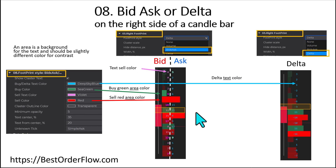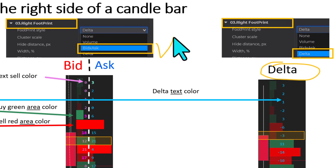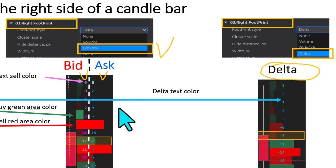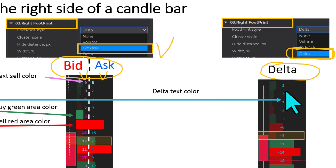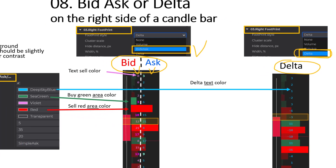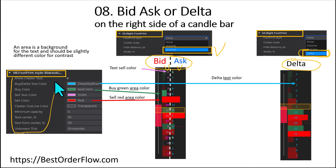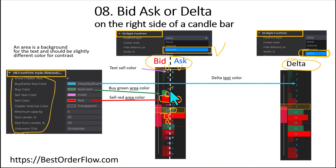We can fine-tune the right side of the candle bar. If we select bid and ask, we see two columns — left for the bid and right for the ask. Or we can choose to show only delta, which represents the difference between bid and ask in a single column to the right of the candle. There are many different styling options to fine-tune how the bid area looks and how the numbers stand out on the background for both bid and ask.